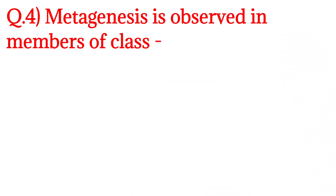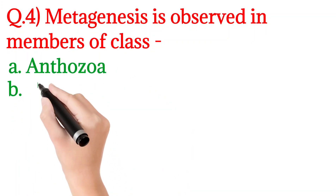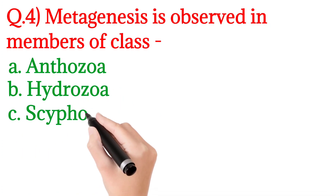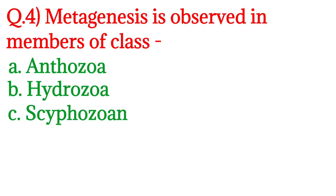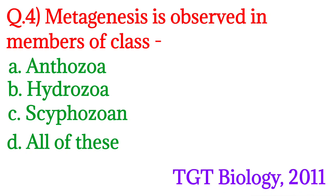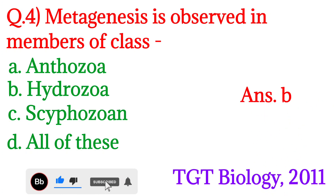Next question number 4: Metagenesis is observed in members of which class — metagenesis किस वर्ग के जन्तुओं में देखने को मिलती है। Option A is Anthozoa, Option B is Hydrozoa, Option C is Scyphozoa, and Option D is All of these. यह question TGT Biology 2011 में पूछा गया था। इसका answer होगा Option number B — Hydrozoa.